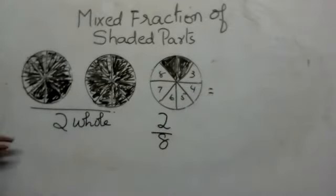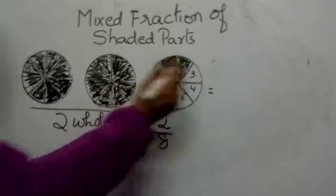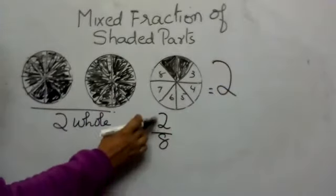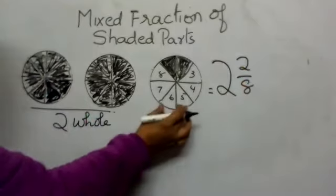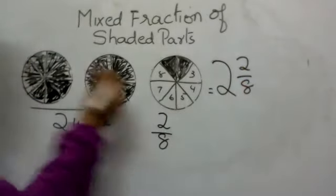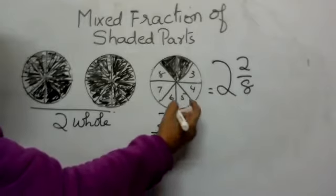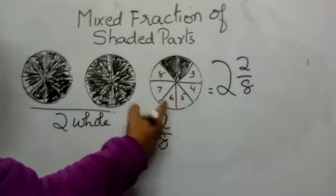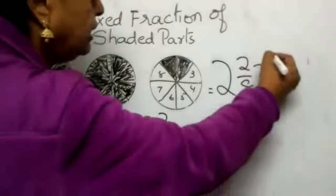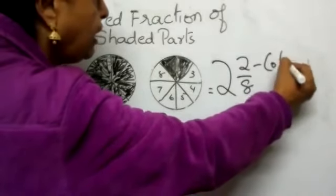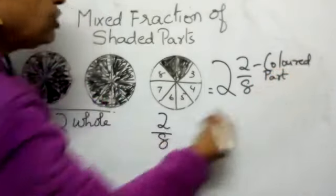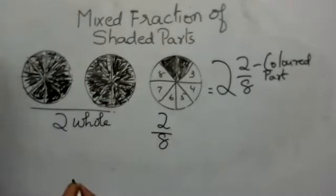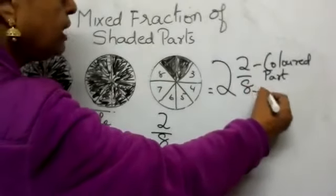Now when we want to write the mixed fraction, these are two wholes. So you write two, and the fractional part is two by eight. This fraction says that out of eight parts, two parts are colored. The top number refers to the colored or shaded parts, and the bottom number refers to the total number of parts.